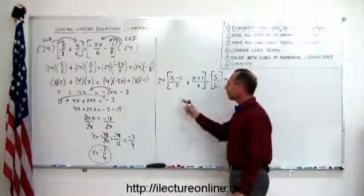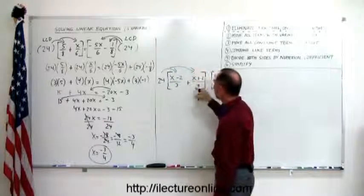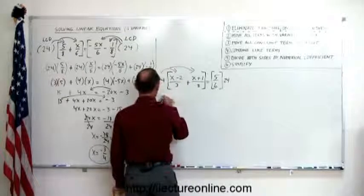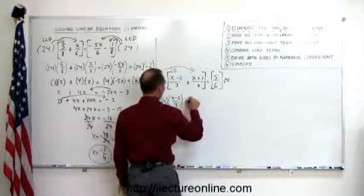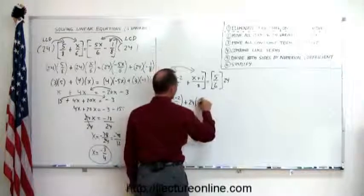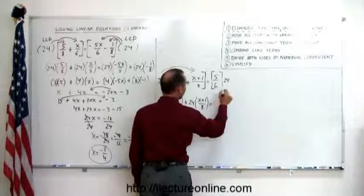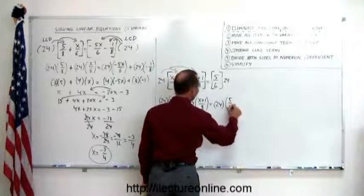Then, just to make it simpler, I'm going to distribute the 24 on each term inside the brackets. So this becomes 24 multiplied times x minus 2 over 3 plus 24 multiplied times x plus 1 over 8. And on the right side, it becomes 24 times 5 over 6.